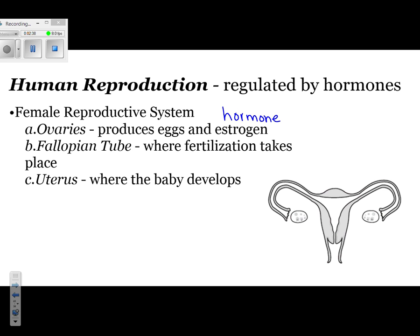The other hormone made by the ovaries is progesterone. You should be familiar with both of these and be able to provide them as examples. The ovaries are located on either side of the female reproductive system, and that's where the egg originates.